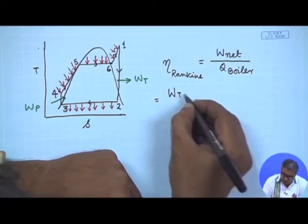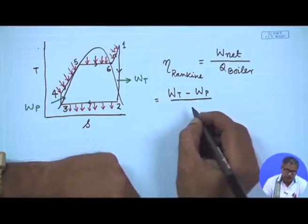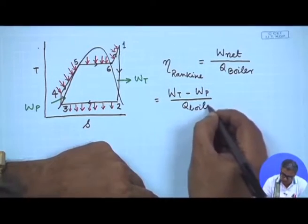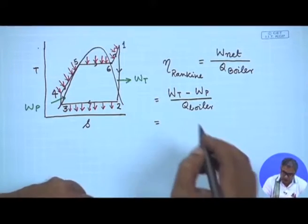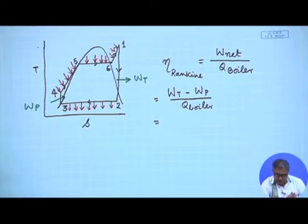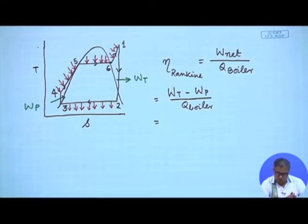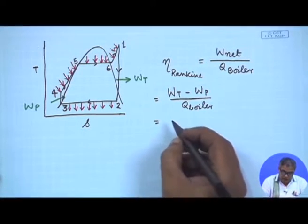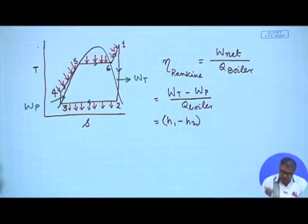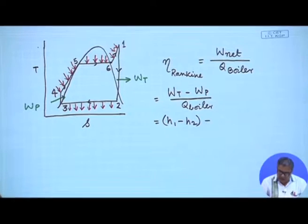The efficiency can be written as W_turbine minus W_pump, divided by Q_boiler. This can be further expanded: the turbine work, assuming the turbine operates under a steady-state steady-flow condition and that changes in kinetic and potential energies are minimum with no heat loss, is given by the enthalpy difference H1 minus H2 — the specific enthalpy of steam expanding through the turbine. So this gives your turbine work minus W_pump.